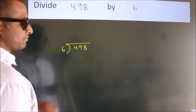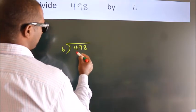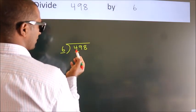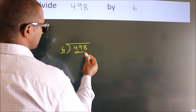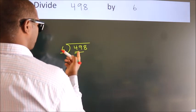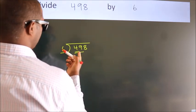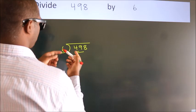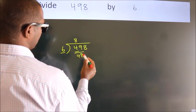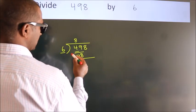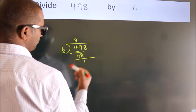Next. Here we have 4. Here 6. 4 smaller than 6. So we should take two numbers. 49. A number close to 49 in 6 table is 6 times 8, 48. Now we should subtract. We get 1.